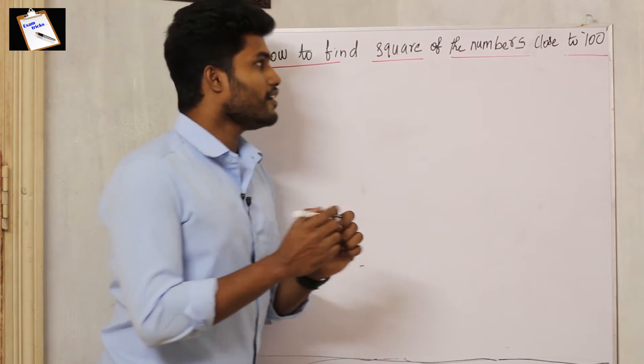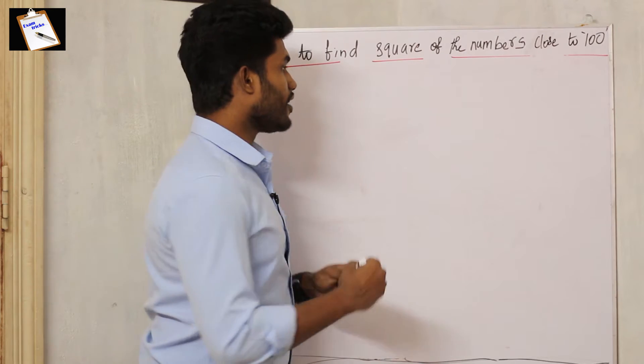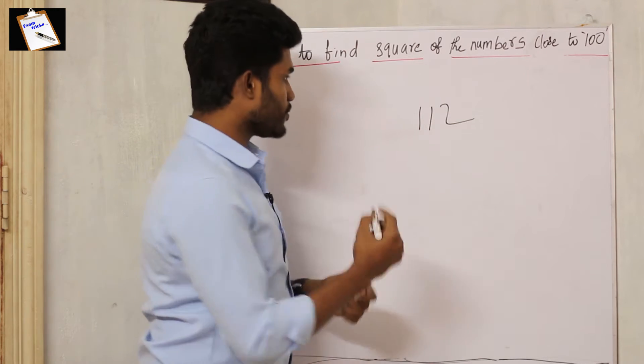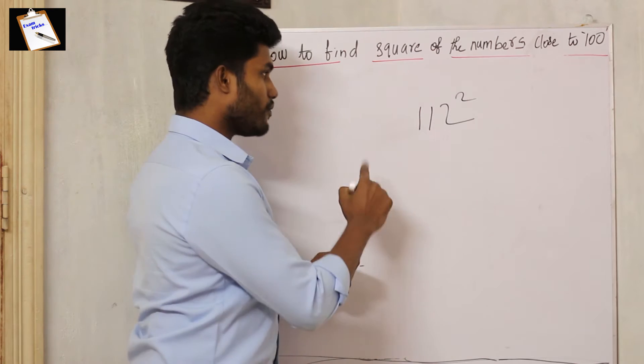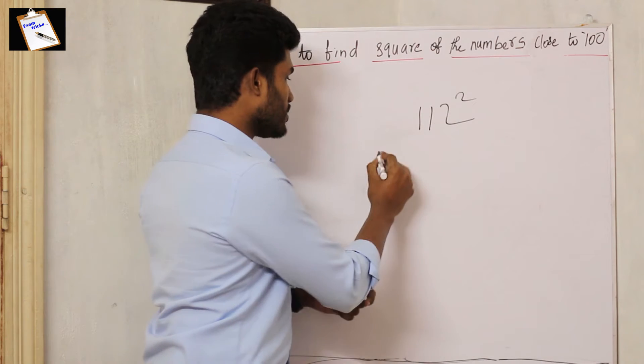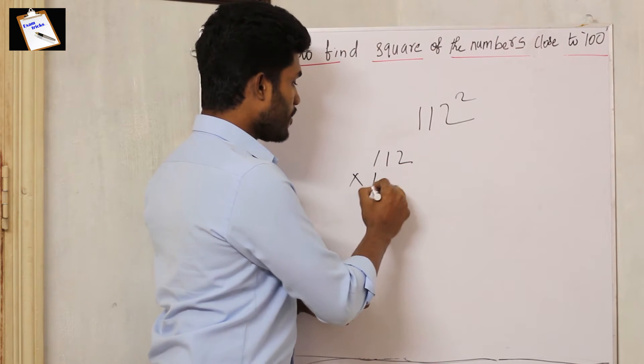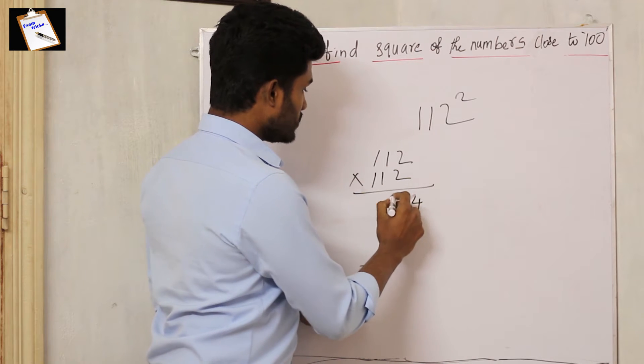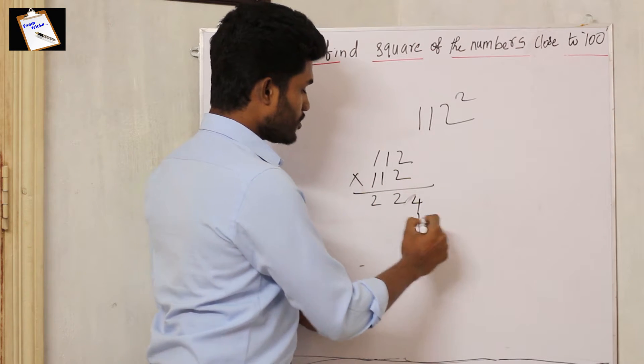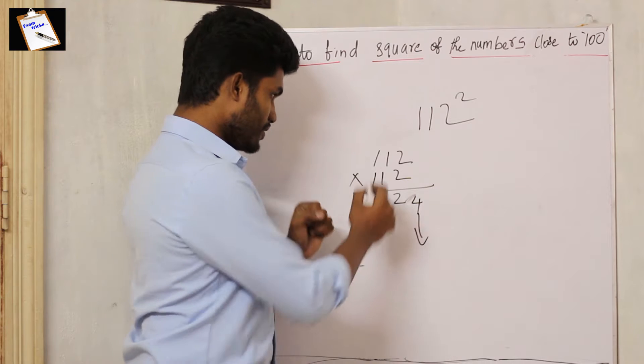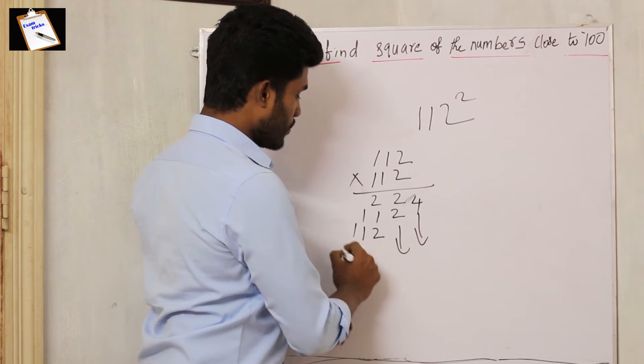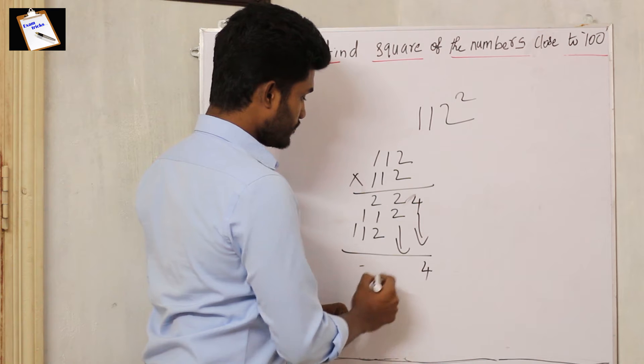For example, 112 square. We multiply the same number two times, so 112 into 112. Two twos are four, then carry two, then two. The numbers go like this: two one one, then once more two one one, so we get 12544.